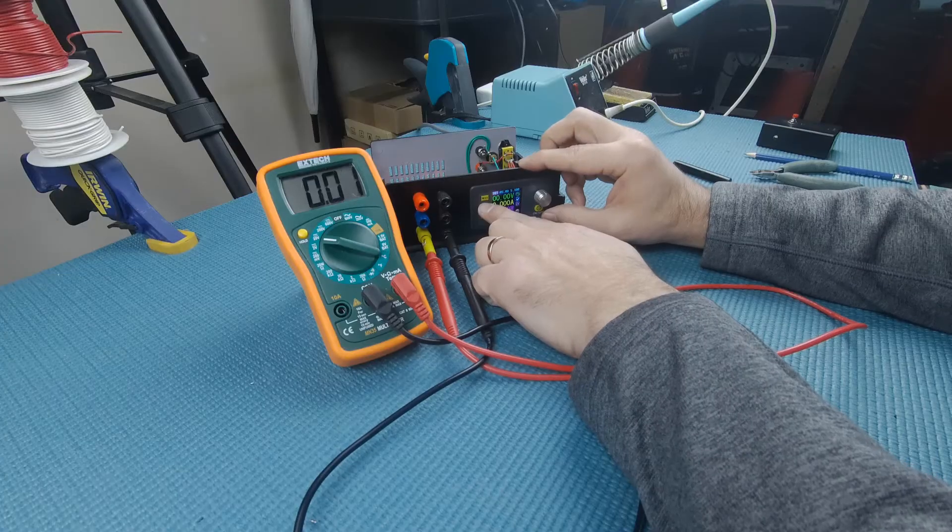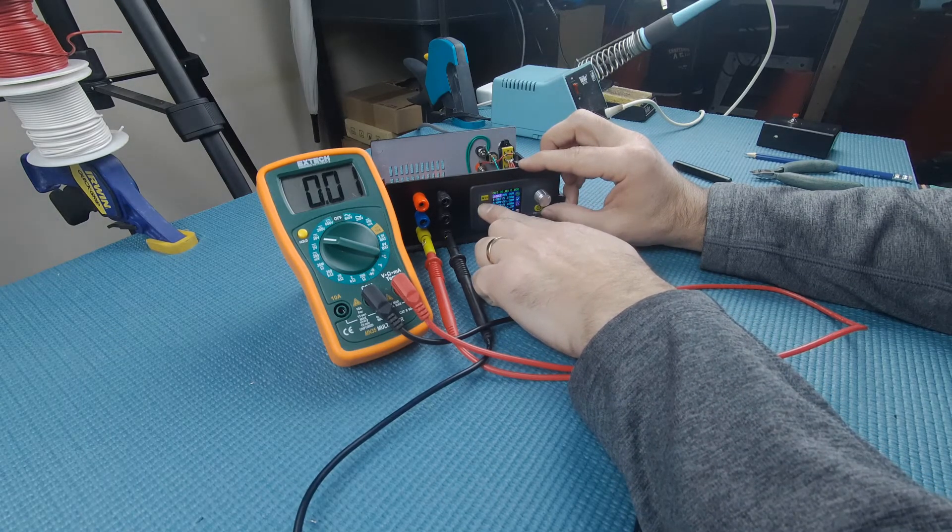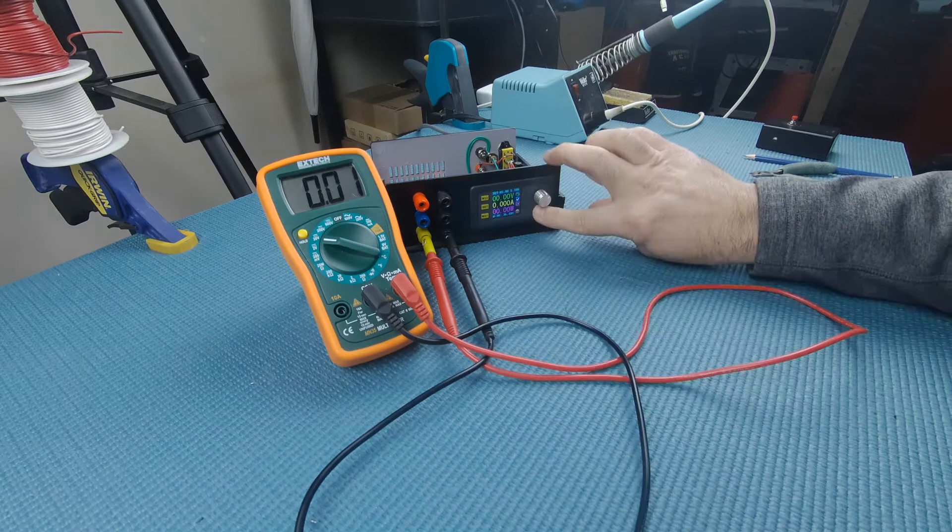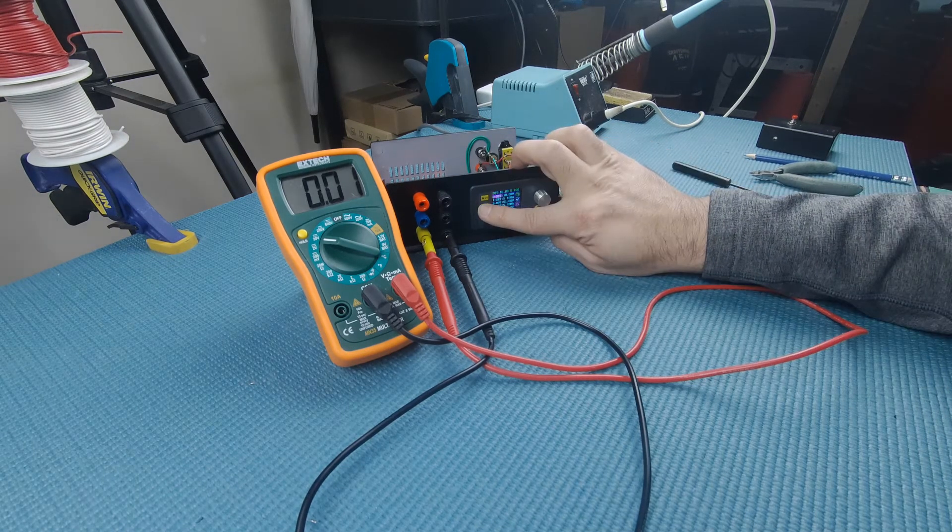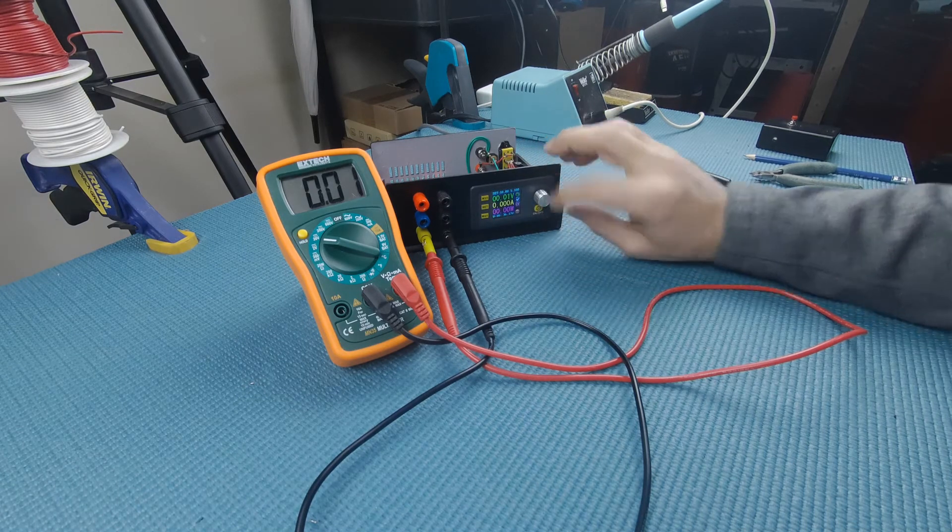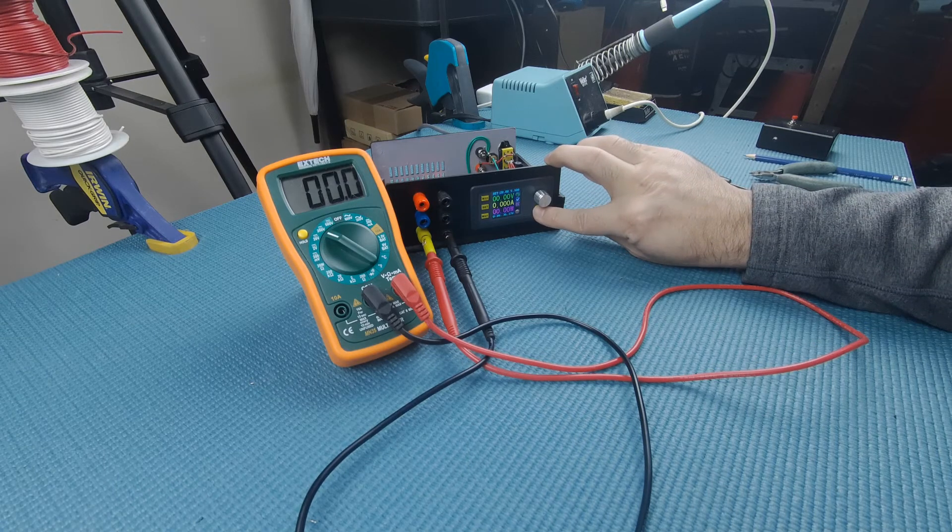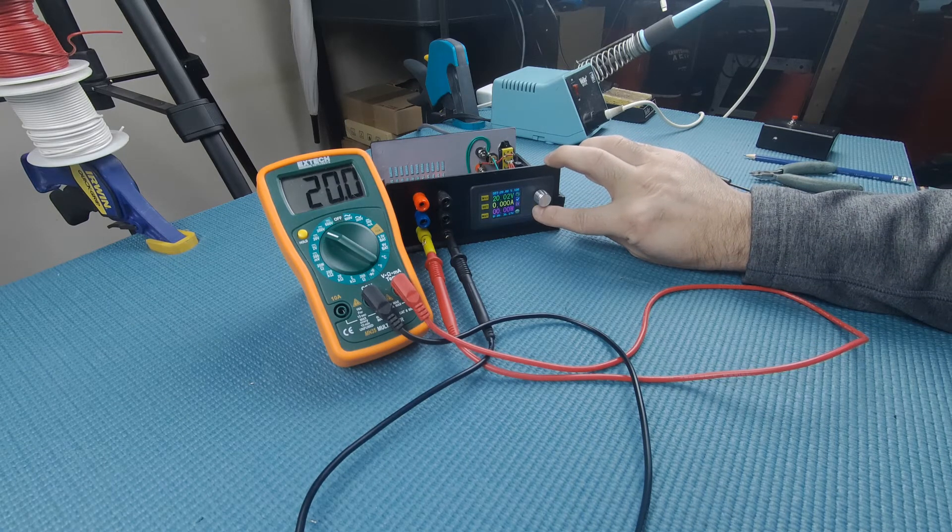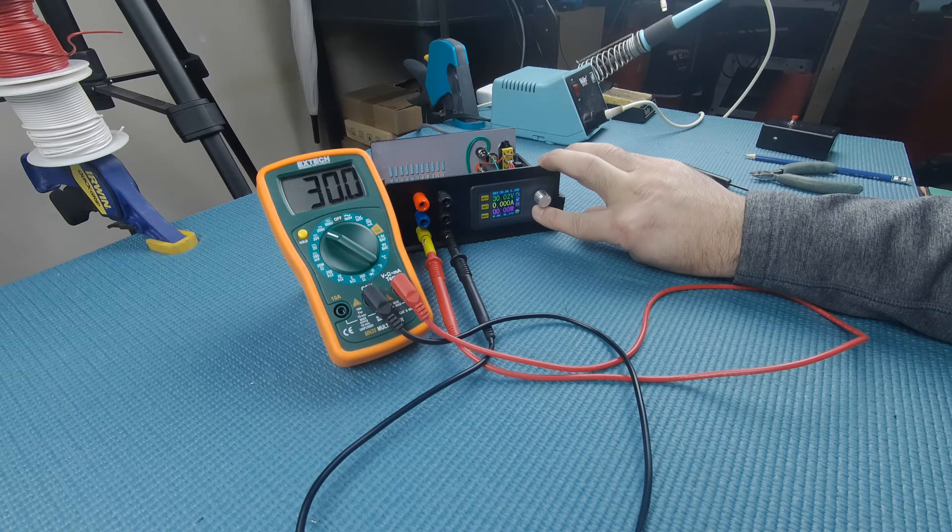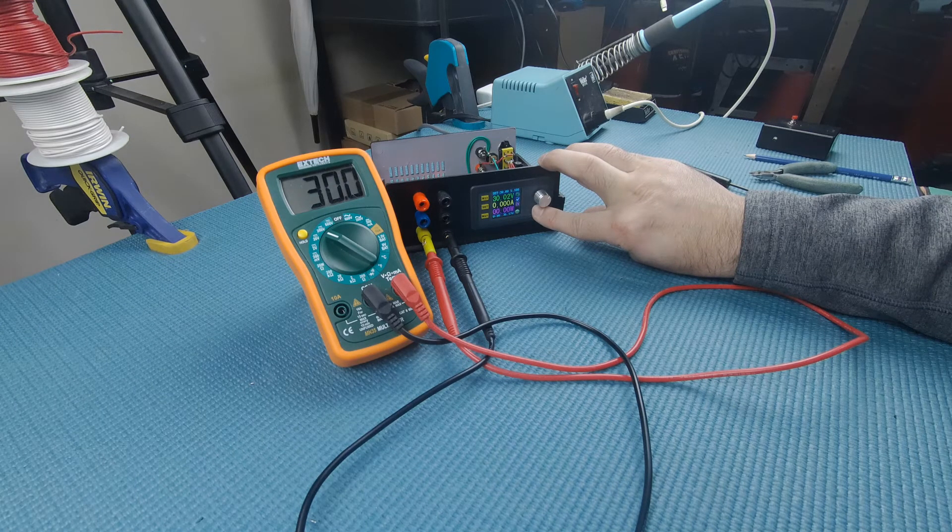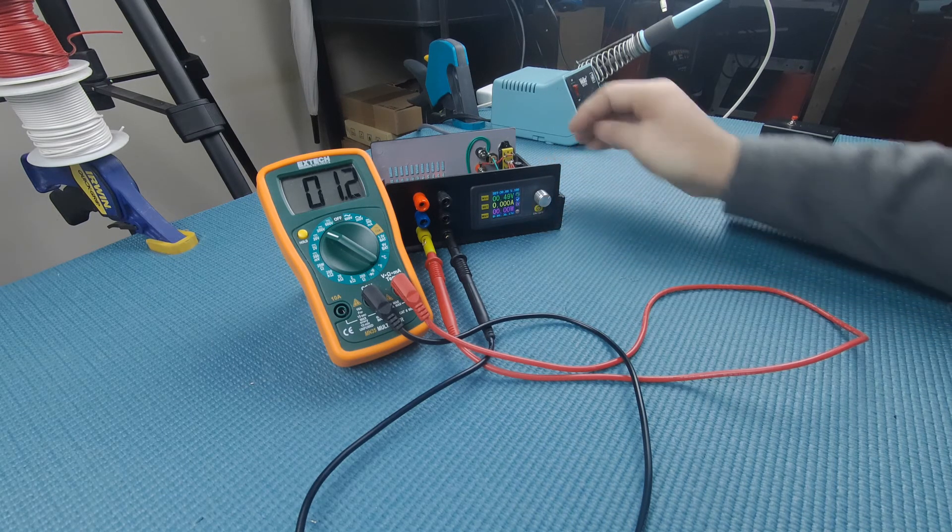Now let's test the converter module starting with a low voltage test first. We'll set the voltage to 5 volts, turn on the output and check the voltage on the DVM. Turning off the output and changing the voltage to 10 volts. We'll continue to go up and test at 20 volts. And the last test will be at 30 volts. That worked well.